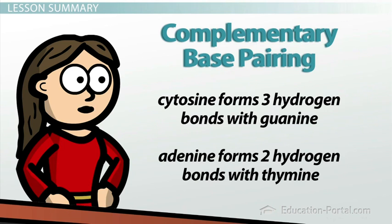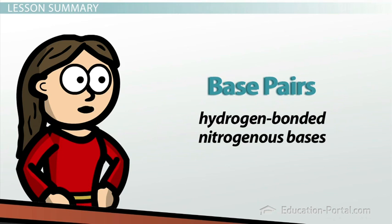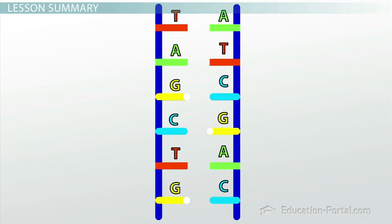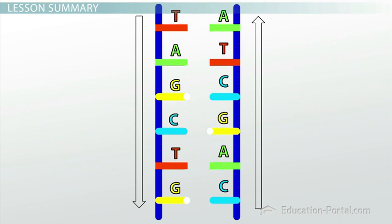Cytosine forms three hydrogen bonds with guanine. Adenine forms two hydrogen bonds with thymine. These hydrogen bonded nitrogenous bases are often referred to as base pairs. Because of the alternating nature of the phosphate groups and sugars in the backbone of nucleic acids, a nucleic acid strand has directionality. The end of a nucleic acid where the phosphate group is located is called the five prime end. The end of the nucleic acid where the sugar is located is called the three prime end.